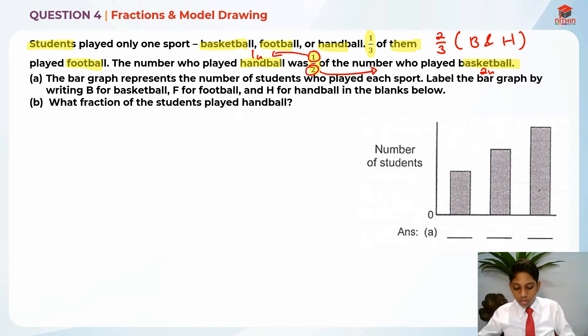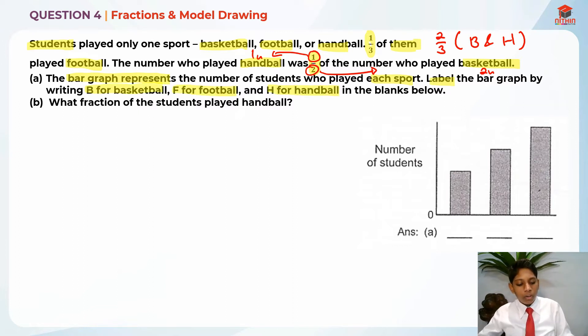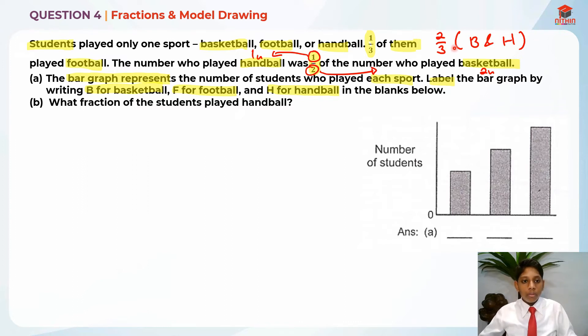For part A of the question, they ask us to label the bar graph by writing B for basketball, F for football, and H for handball in the blanks below. In order to solve this, we need to draw a model first. The model should have three boxes because it is representing three units of the total — one third for football and two thirds for basketball and handball. So the denominator is three, and we use the denominator to draw the model.